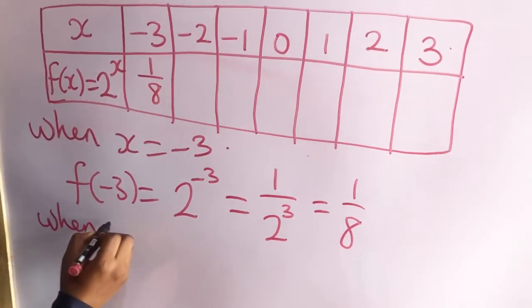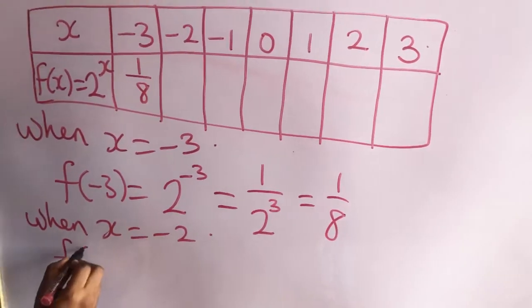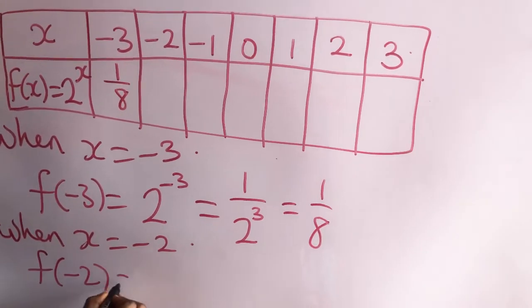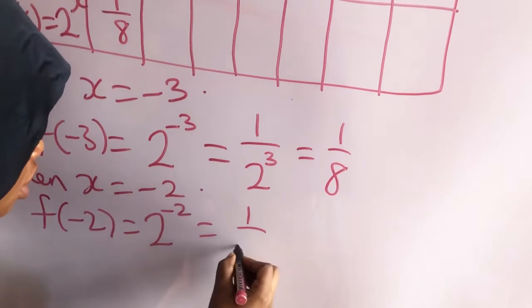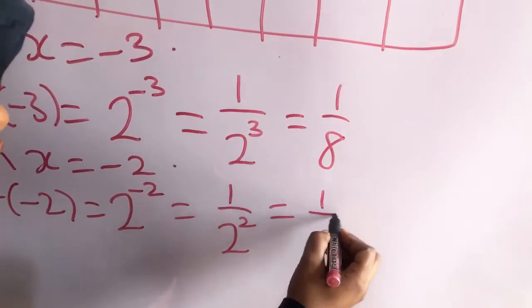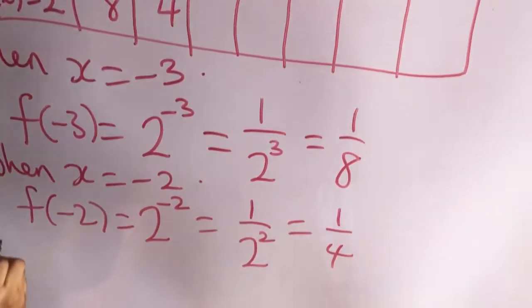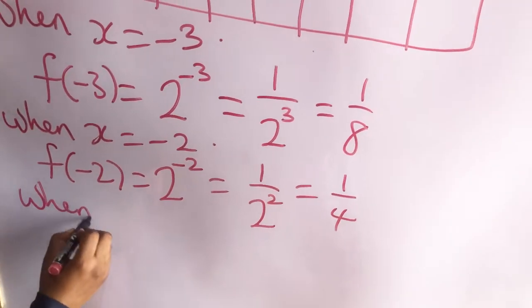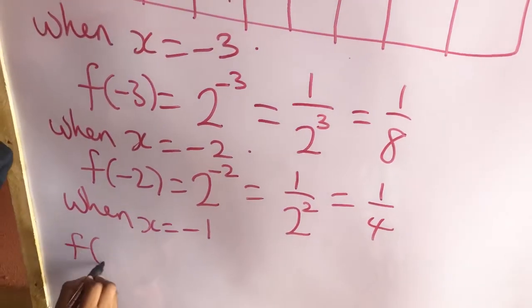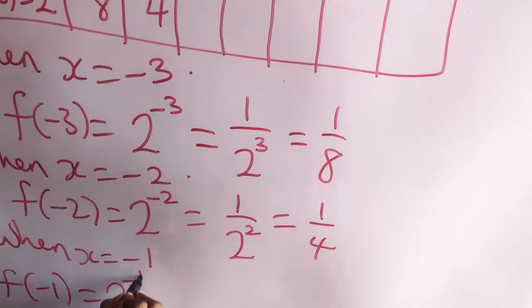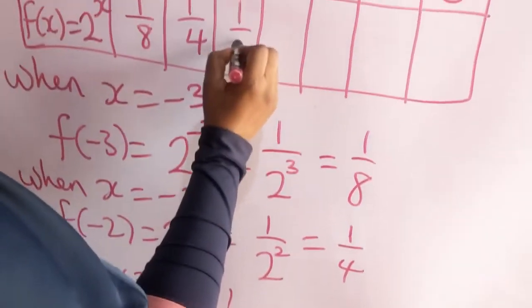So 1 over 4 goes here in the table. When x is equal to minus 1, f(minus 1) will be equal to 2 raised to the power minus 1, which is equal to 1 over 2. So 1 over 2 will be placed here.